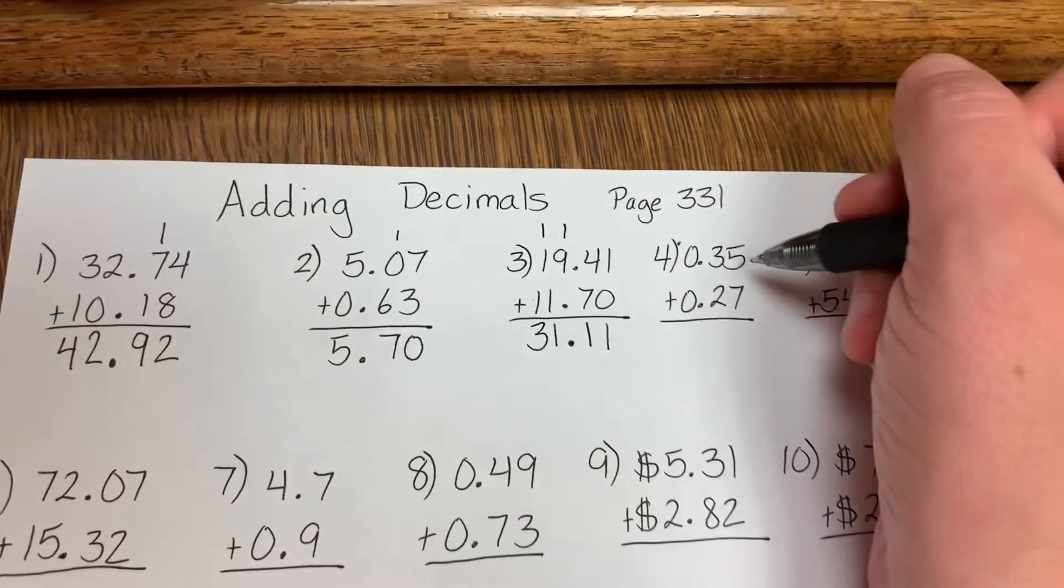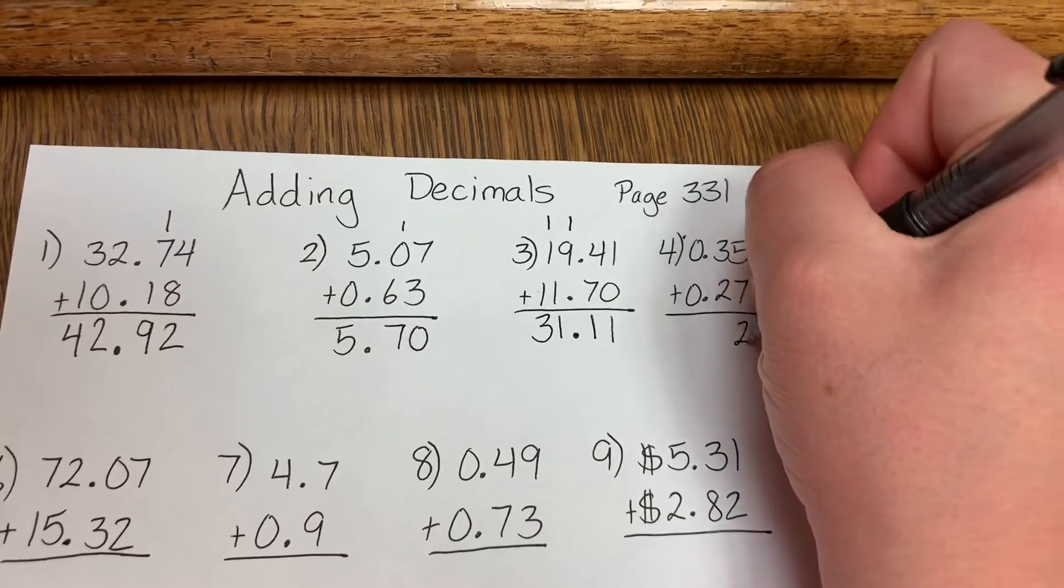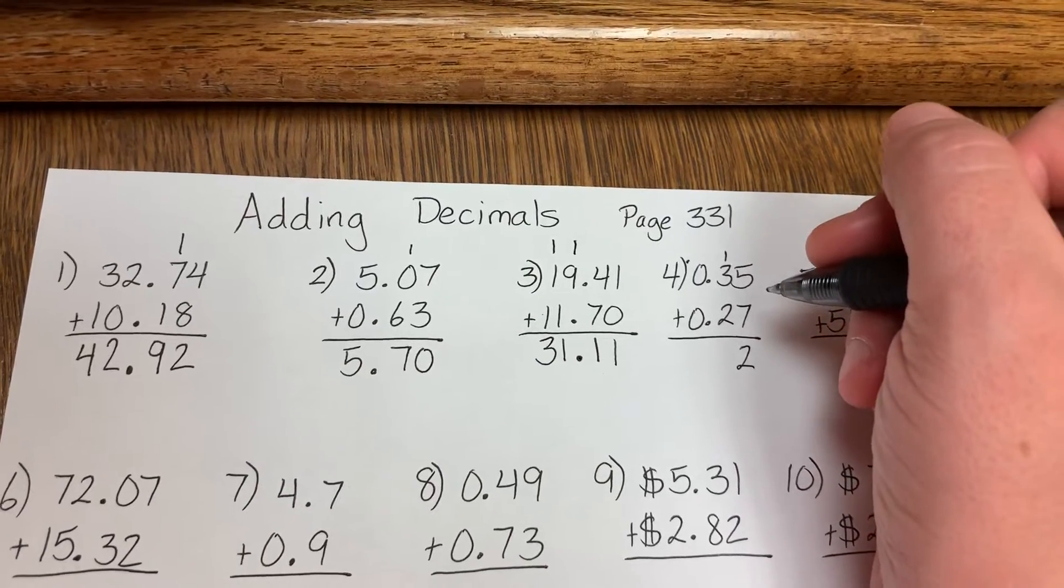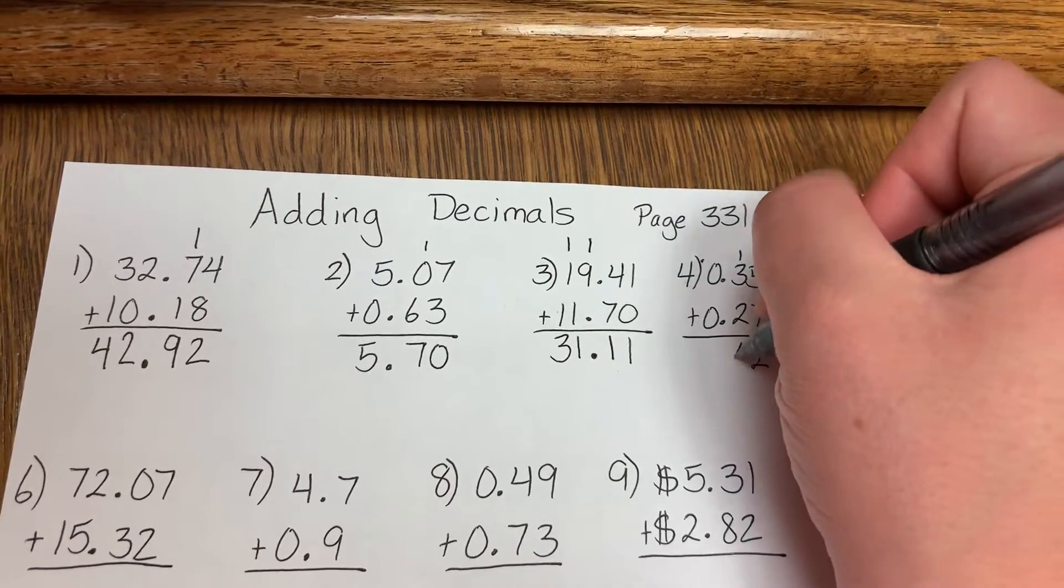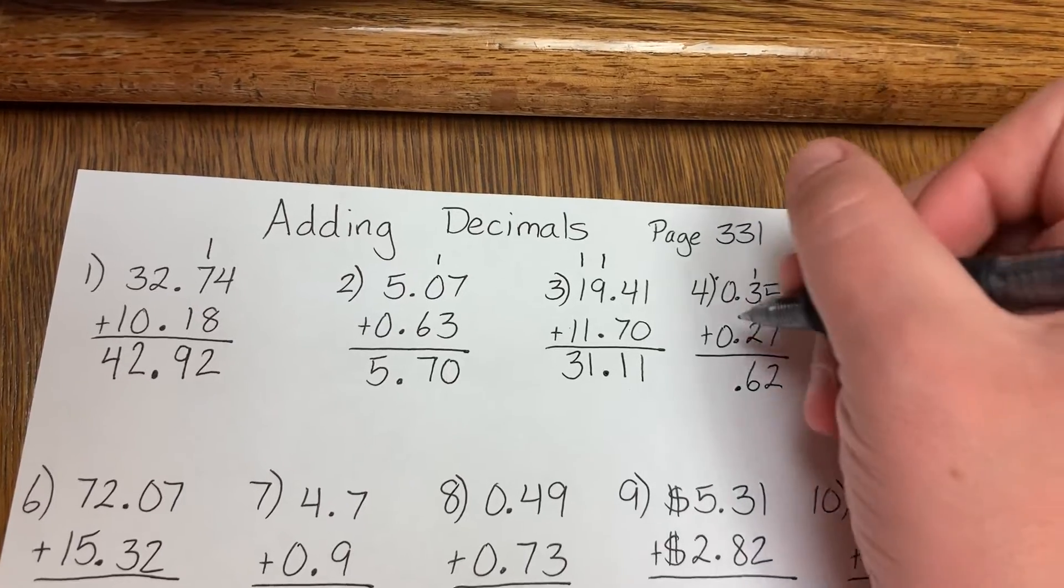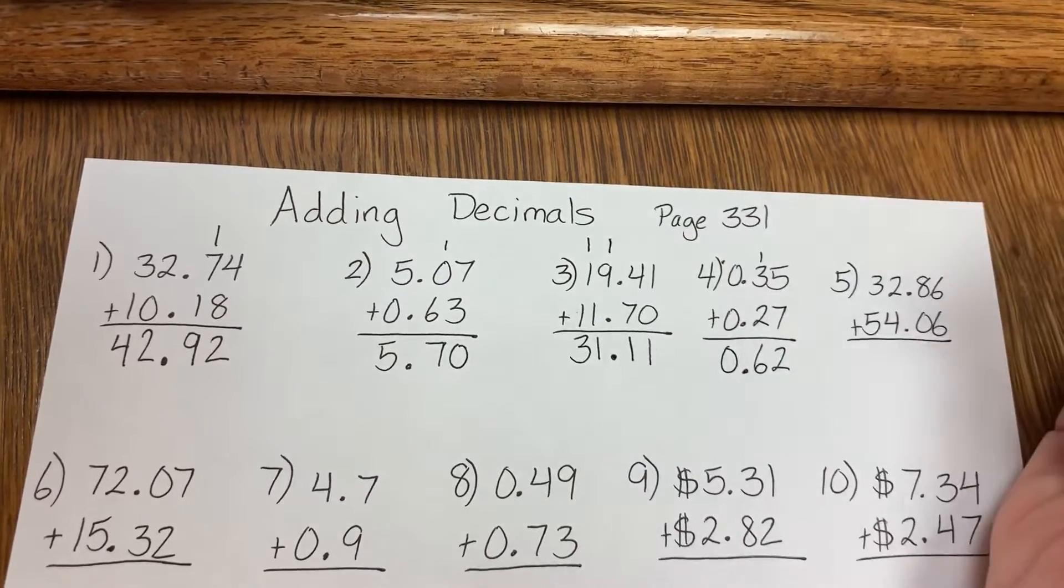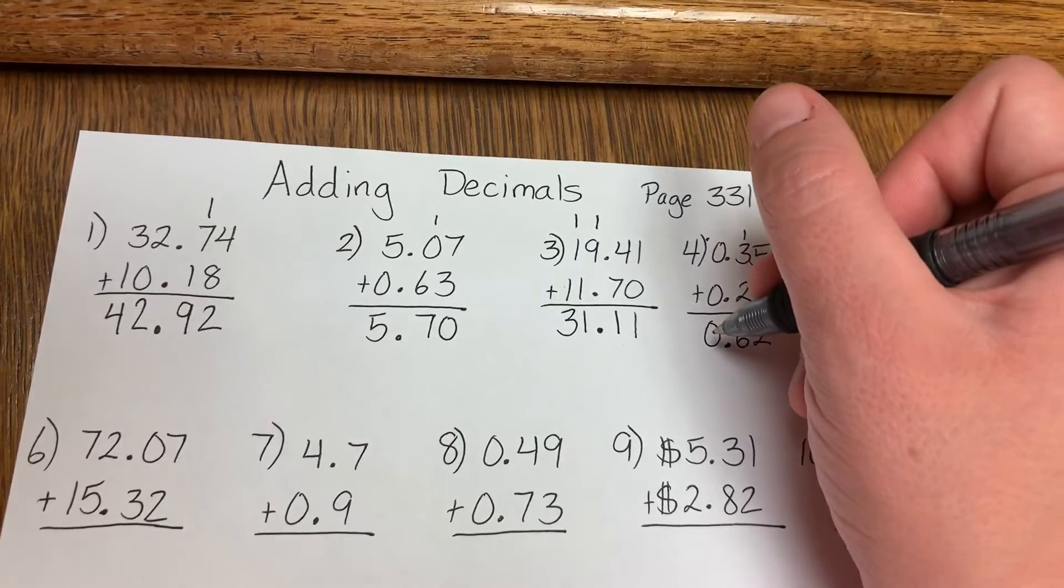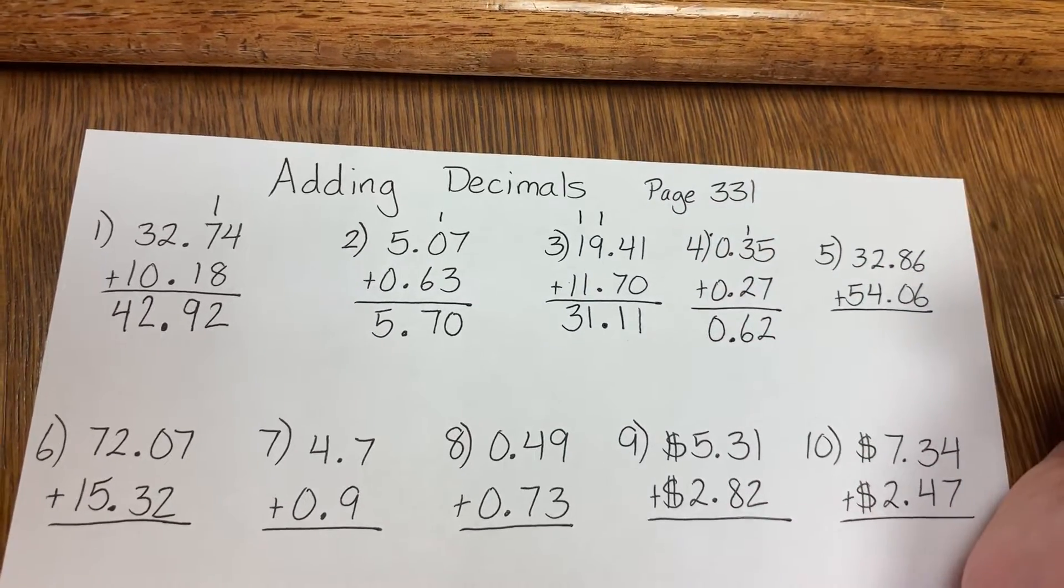Number 4: 5 plus 7 is 12. 2 down, carry the 1. 1 plus 3 is 4, 4 plus 2 is 6. Bring down the decimal. And 0 plus 0 is 0. And yes, you need to write it so it can hold that decimal, or that ones place. For 0.62 is the answer.